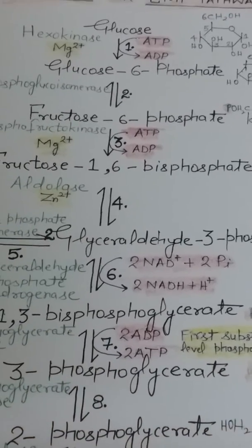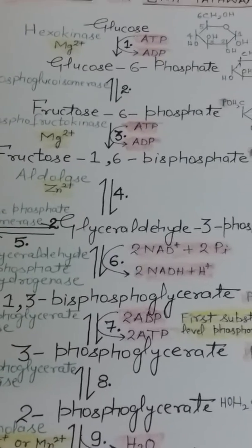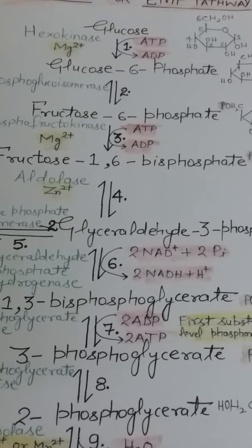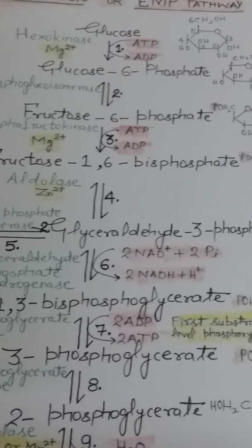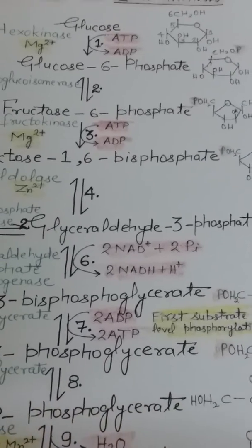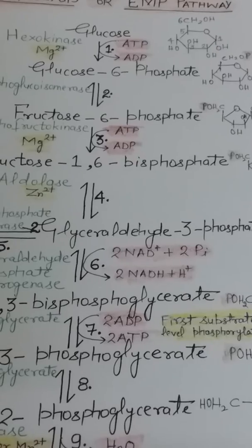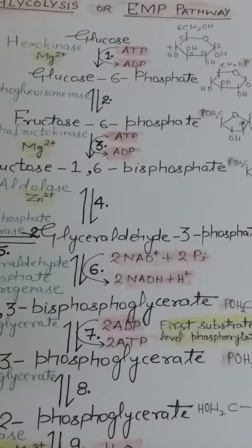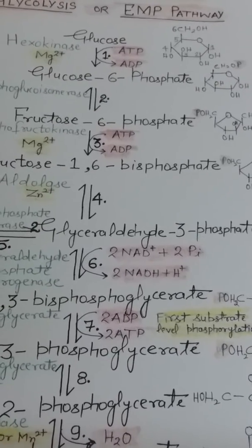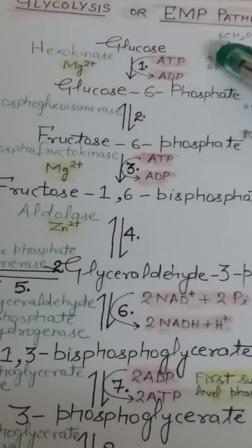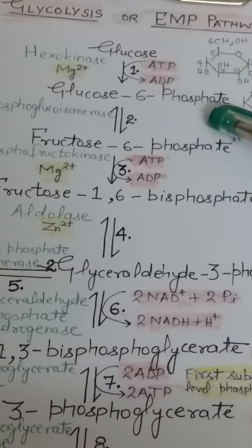Why is there a need to phosphorylate glucose? The cell wants to trap glucose inside the cytoplasm and prevent it from exiting the cell. By adding this negatively charged phosphate group, the cell keeps glucose inside since it is no longer capable of being transported across the cell membrane. Moreover, adding a phosphate group destabilizes glucose — glucose is more stable compared to glucose-6-phosphate.